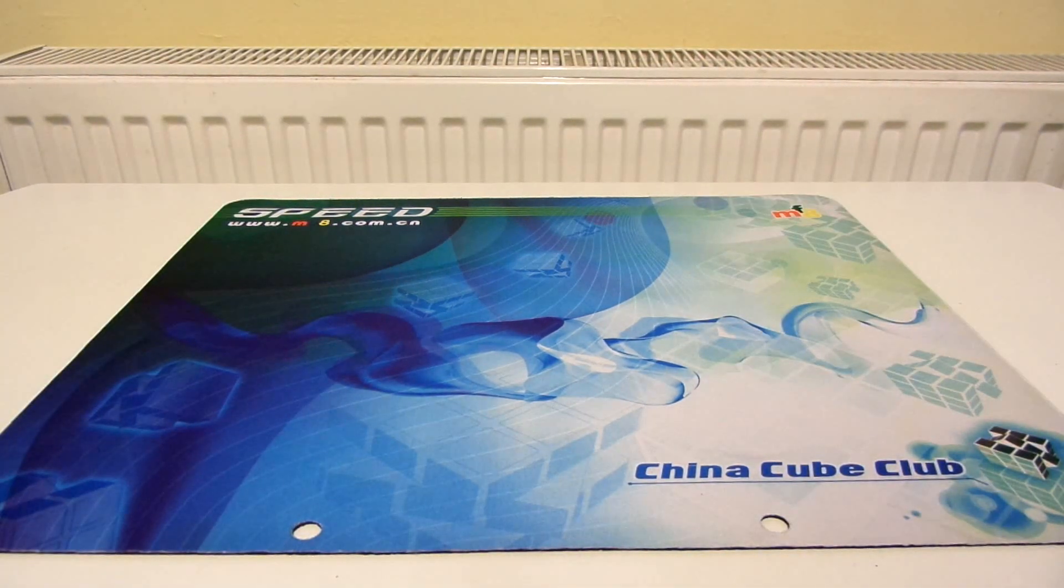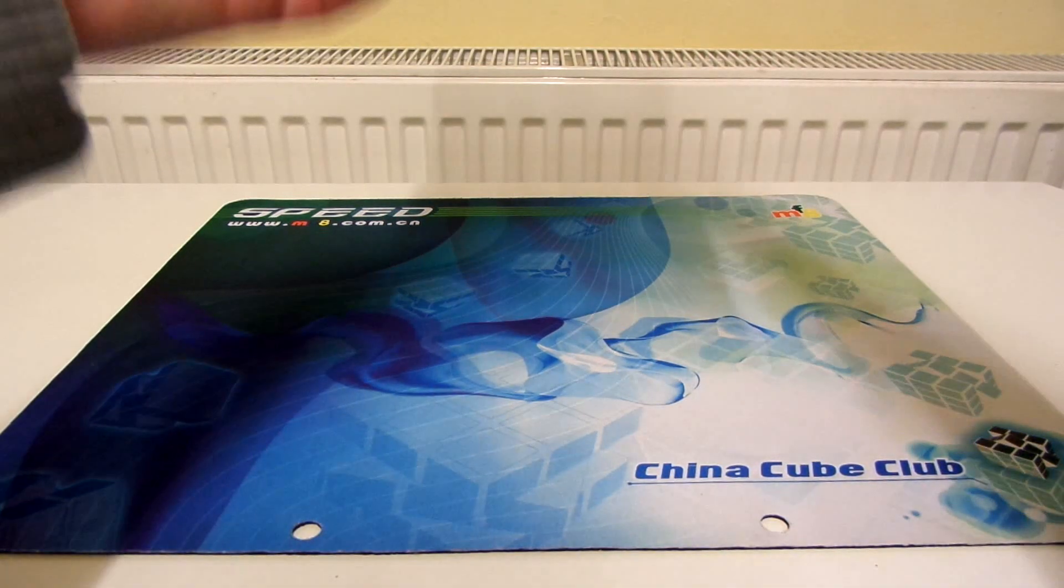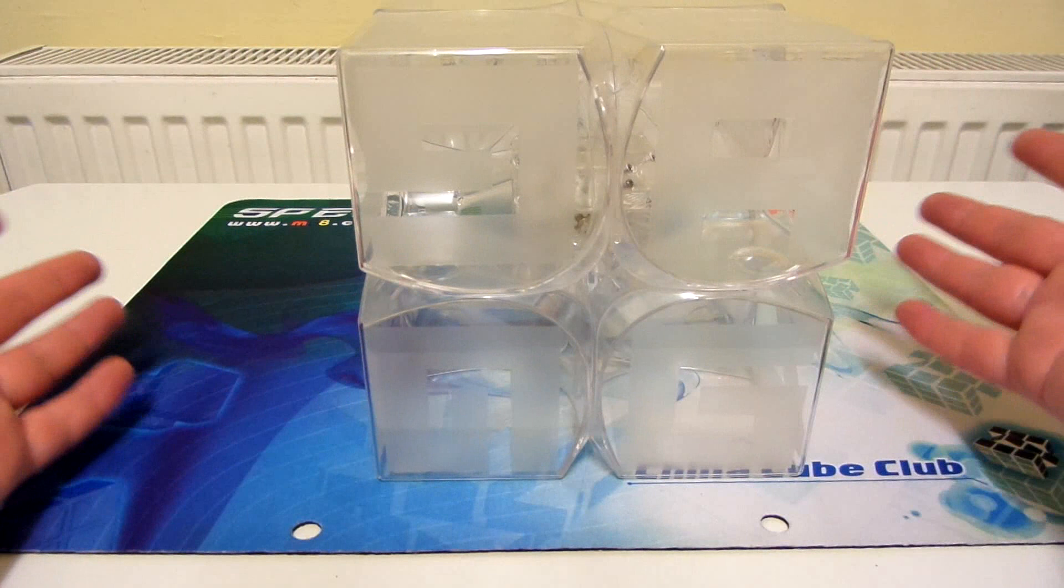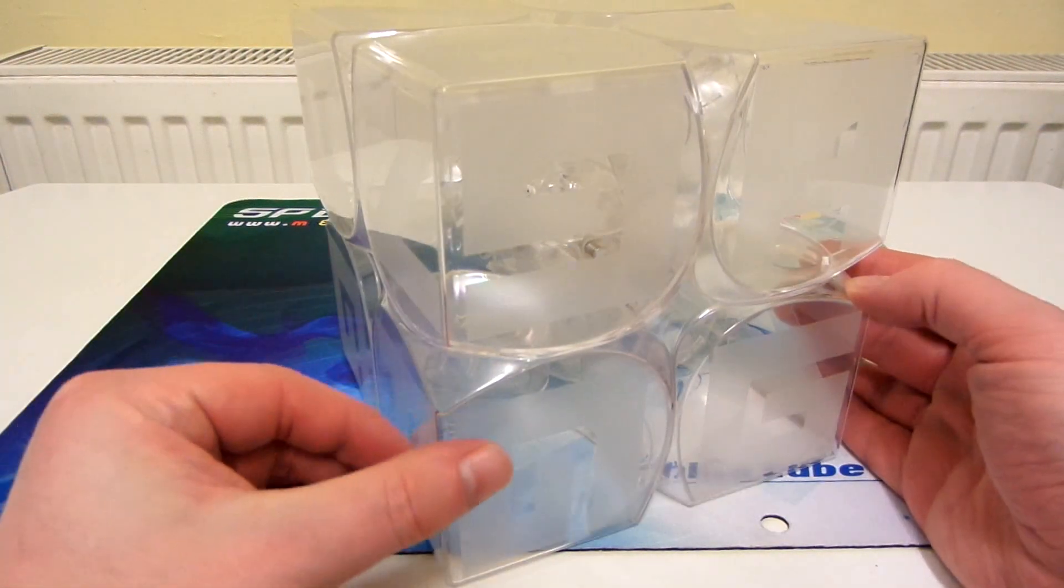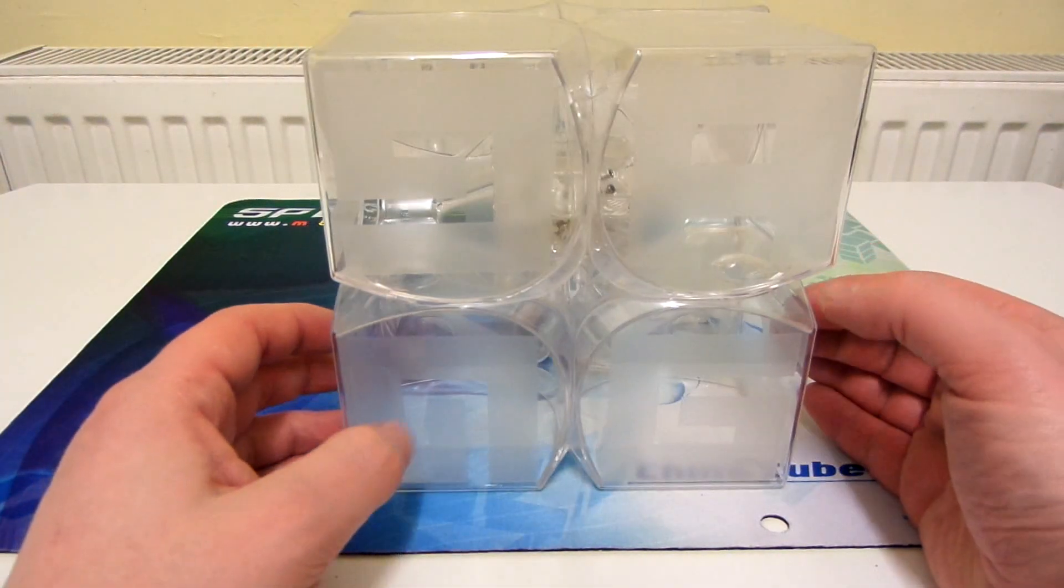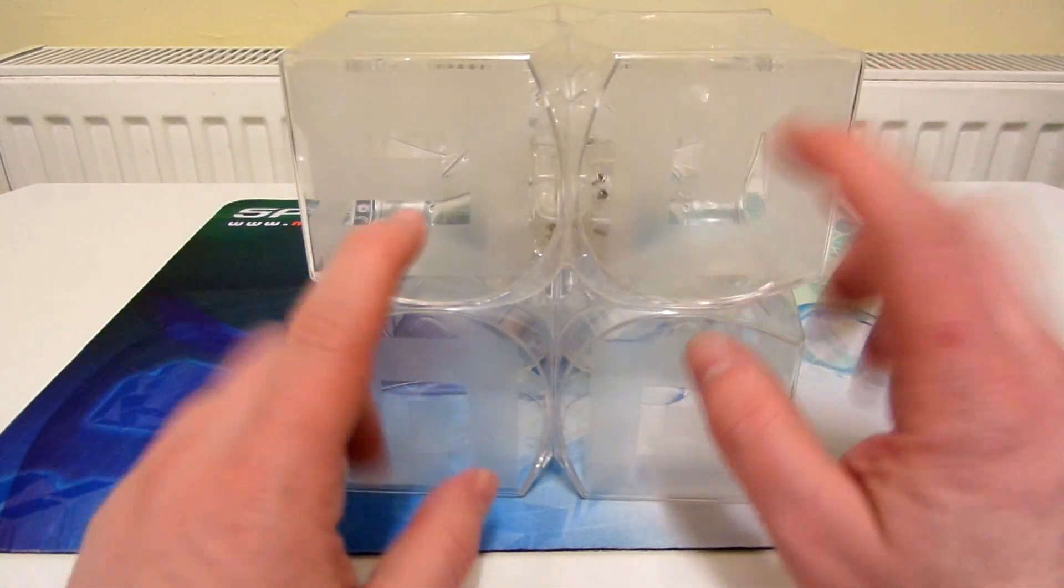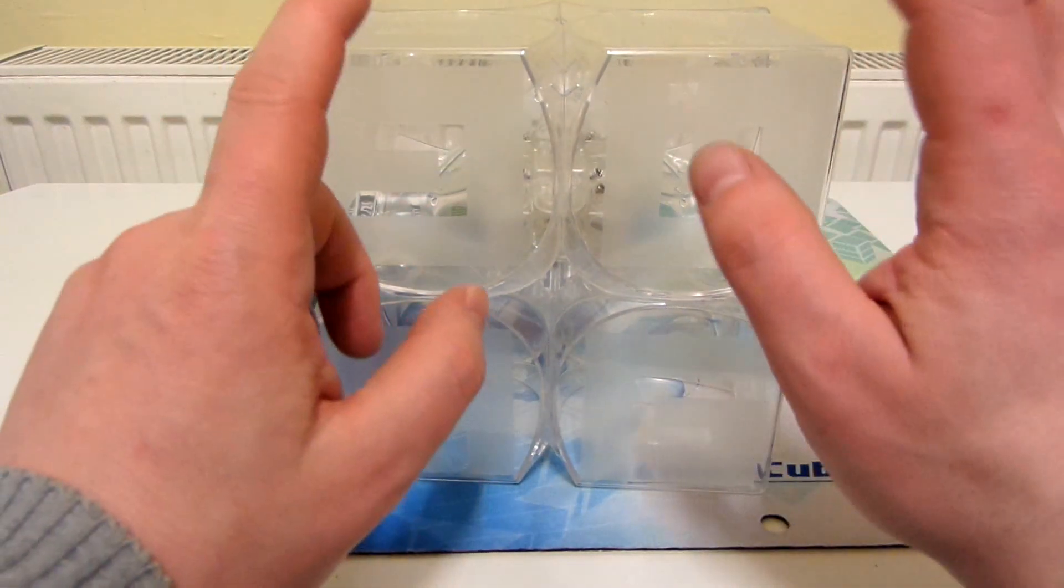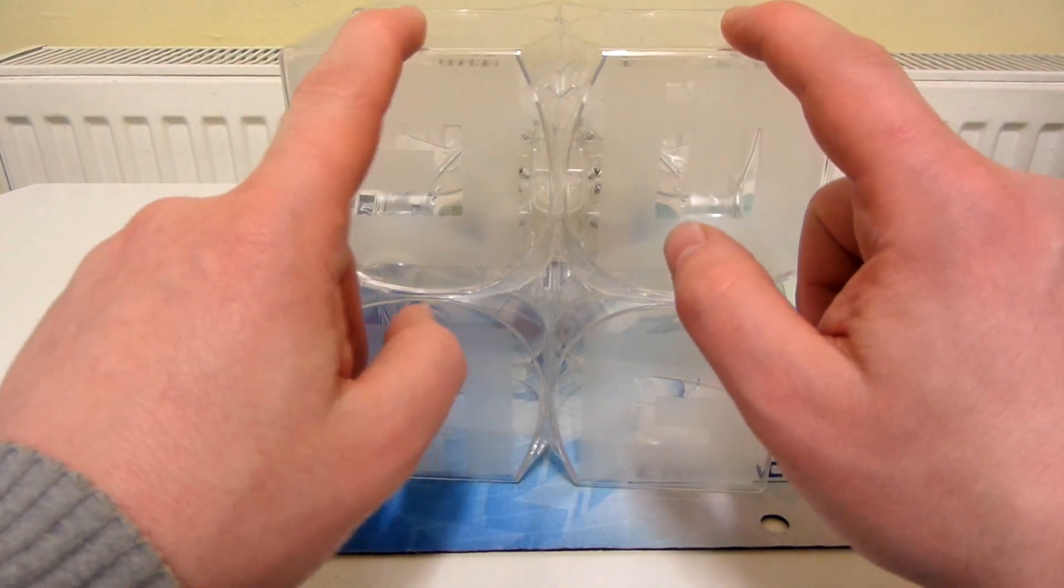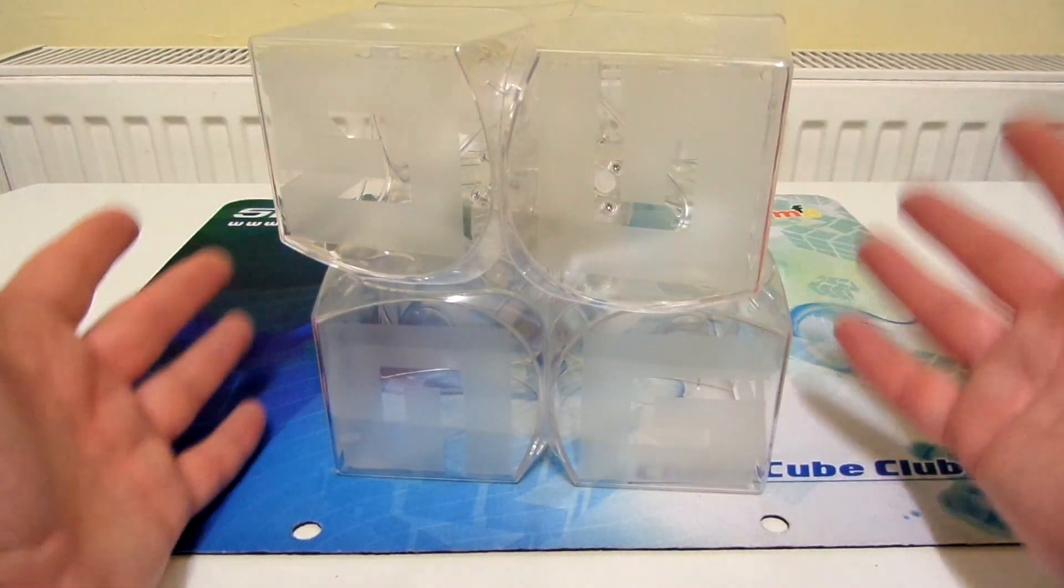So, starting off with the 2x2s, I don't really think this needs any explanation for why it's my favorite. I mean look at it, it's just a massive, absolutely massive 2x2. Yeah, I've still not got around to stickering it yet. You can also put 3x3s inside each of these cubies to give it a color scheme.